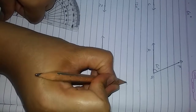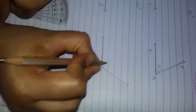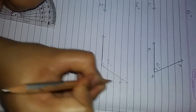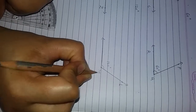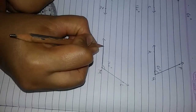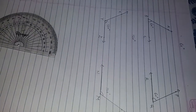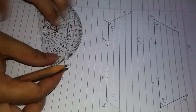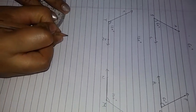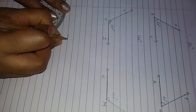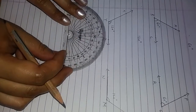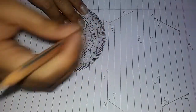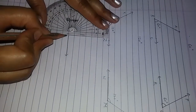This is the 120 degree angle. Now, how to draw a 90 degree angle — let's see. Where is 90 degrees? You only see 90 degrees one time, which means it is a straight angle.